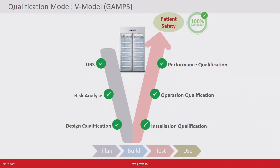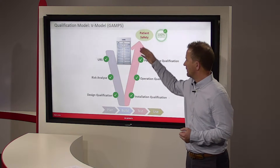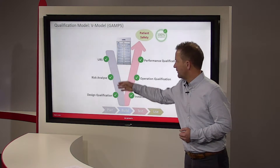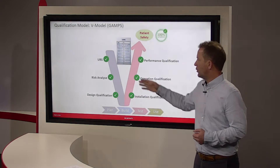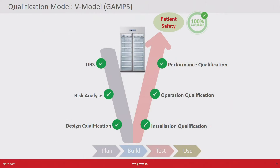Before going into the details, a few words about the generic model. We work with the so-called V model — named because it is shaped in the form of a V. On the left side we plan, then we build or purchase, and on the right side we do the testing, and then we are ready to use it.